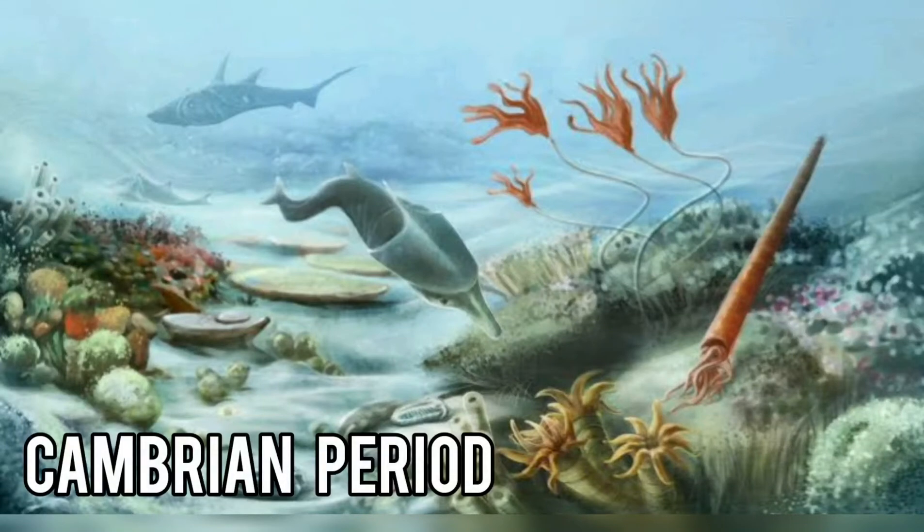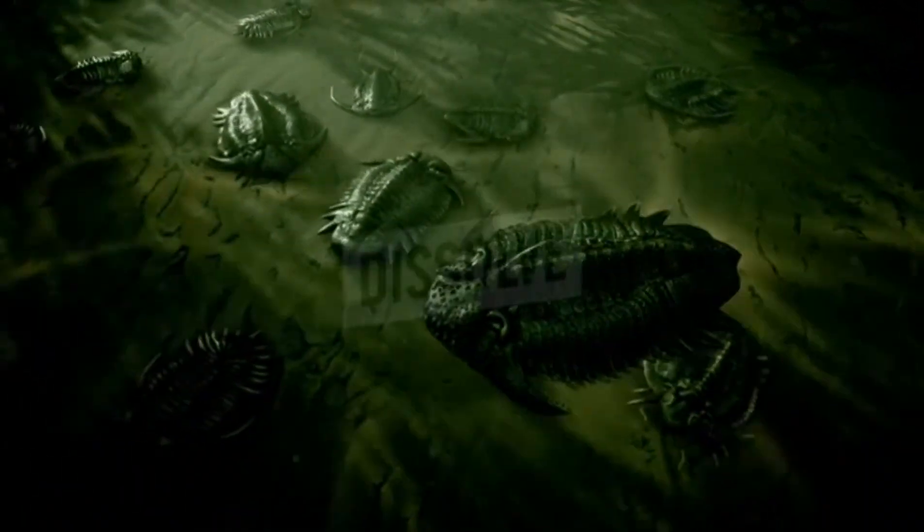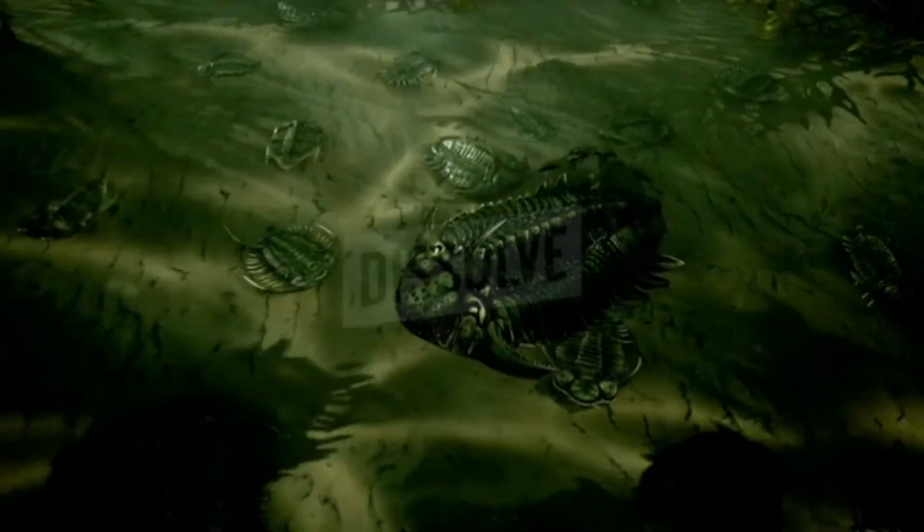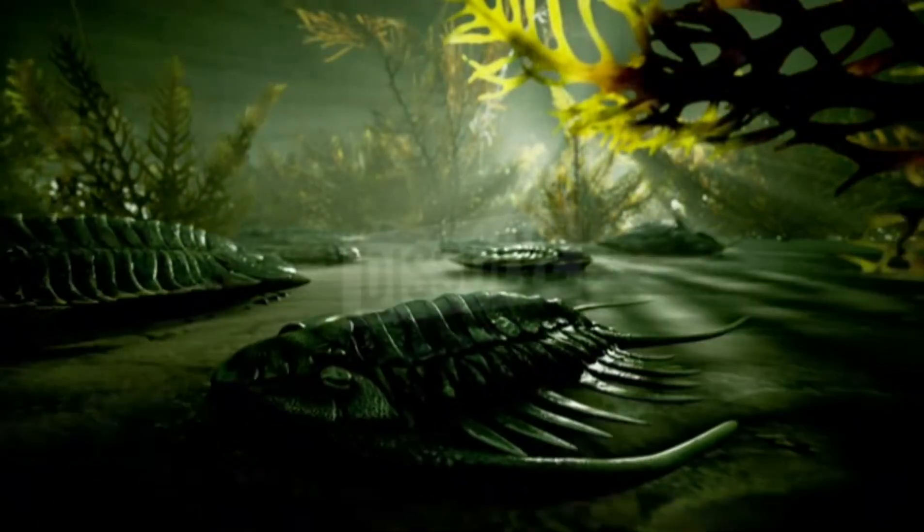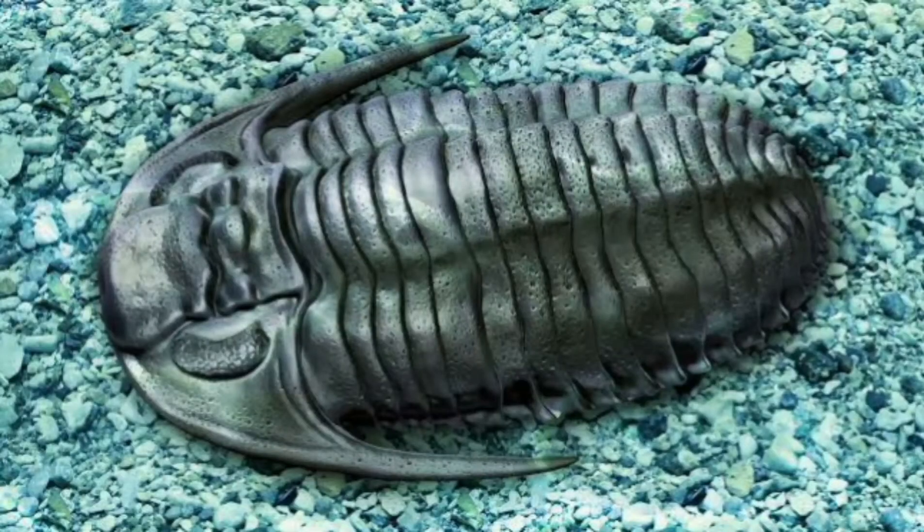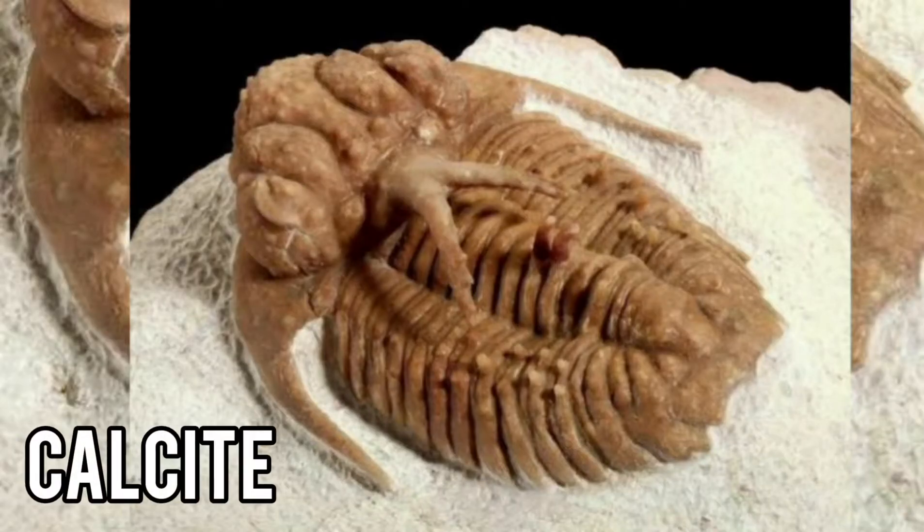Going back to the Cambrian period, trilobites were exclusively marine animals that appeared in the Cambrian period and persisted till the Permian. The trilobites had a hard upper shell called the carapace. Those were made of calcium carbonate mineral called calcite.